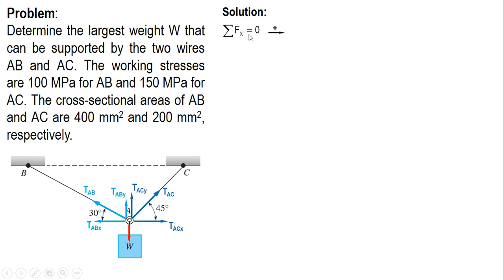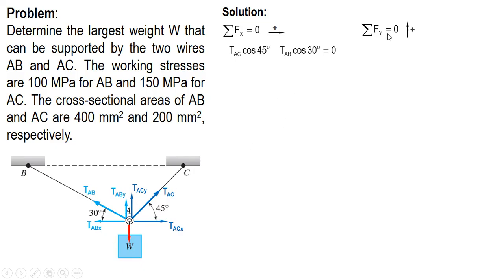For the first condition, summing forces horizontally, there are only two forces: the x-component of T_AC is cosine 45° and for AB is cosine 30°. The second condition, summation of forces vertical equal to zero with upward positive, gives us T_AC y and T_AB y as positive and W as negative.